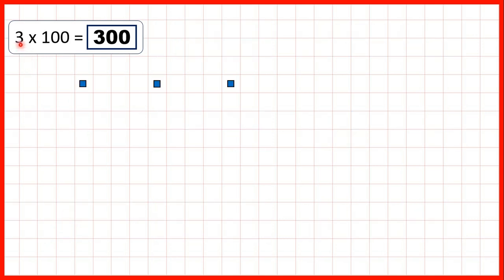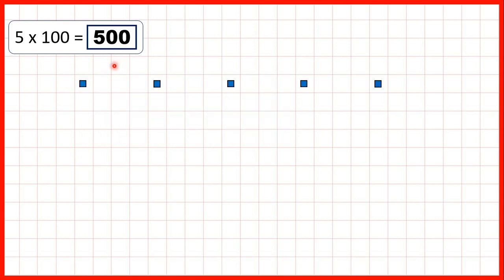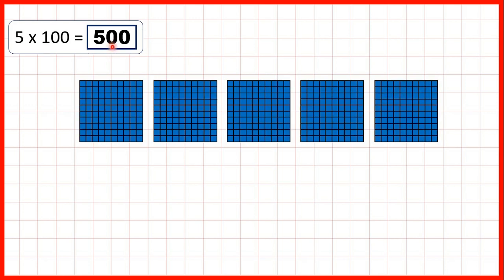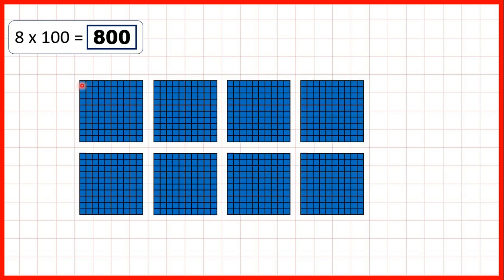So for 3 times 100, we can show 3, and if we make those three counters 100 times bigger we get 300. For 5 times 100 we can do the same thing to get 500, and for 8 times 100 we can show 8 ones counters, but if we multiply by 100 we get 800.